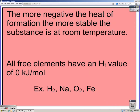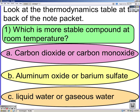The more negative the heat of formation, the more stable the substance is at room temperature. All free elements have a Delta H value of zero kilojoules per mole because it doesn't take any energy to form an element—they're already in their elemental form. It doesn't matter if it's diatomic or by itself.